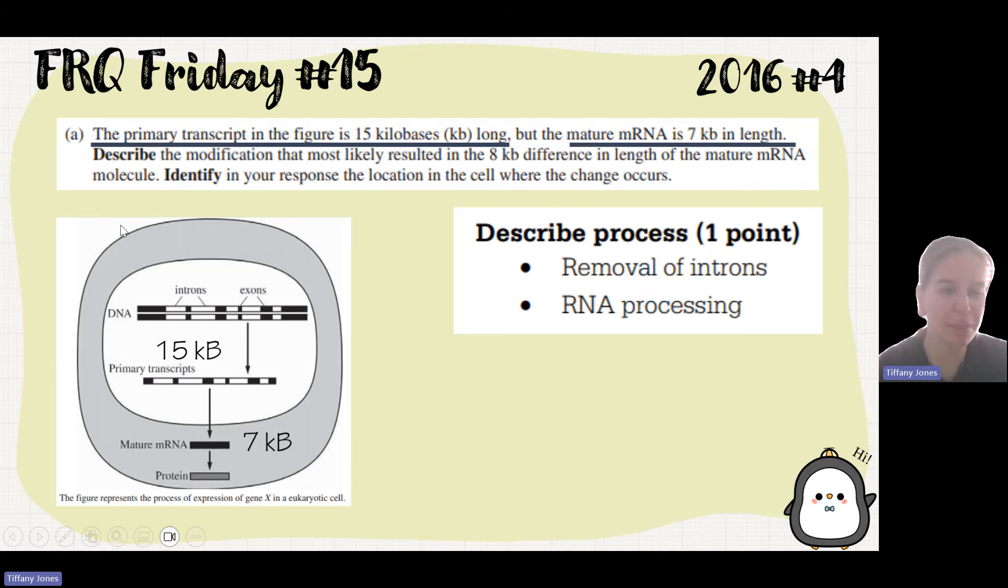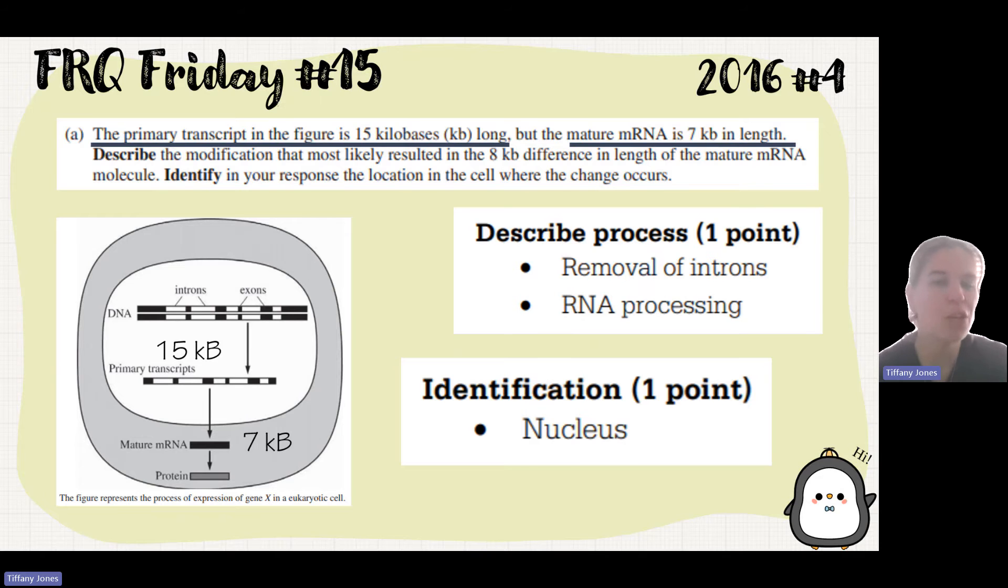So using the diagram again, I see there's a circle, and the DNA is inside the circle, and then my protein and my mRNA are outside of that circle. So I can say, where is the DNA found in a cell? Well, the DNA is found in the nucleus. So this takes place in the nucleus. Use your diagram to answer your questions.